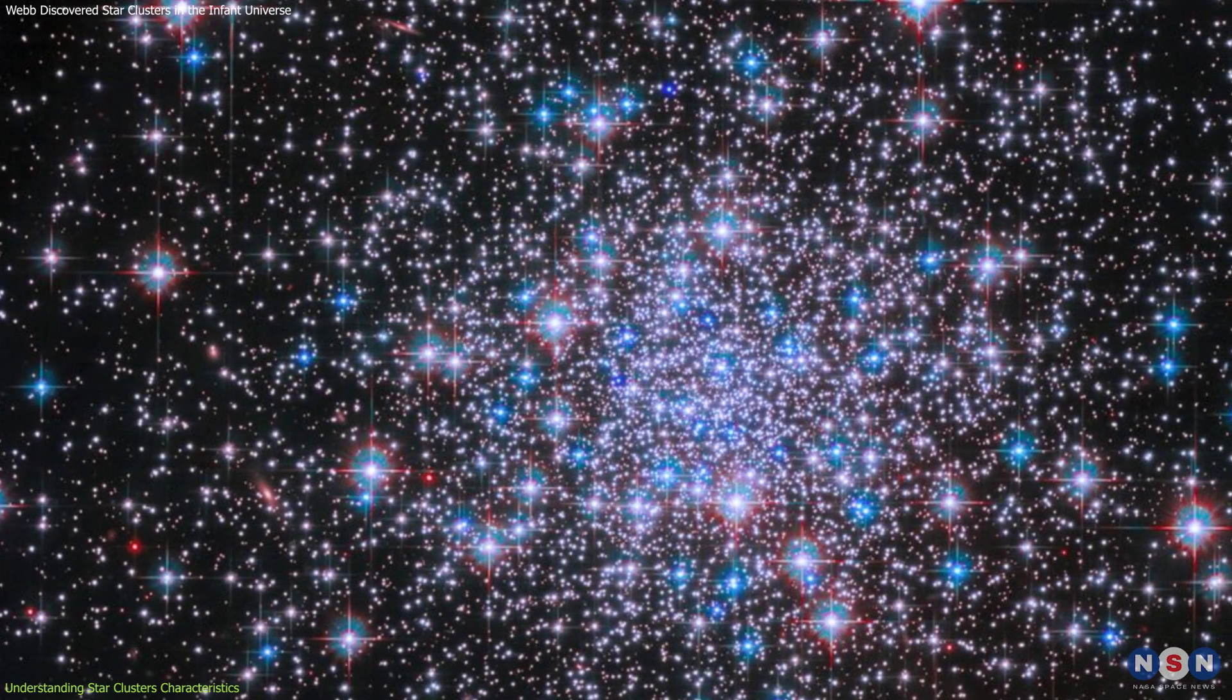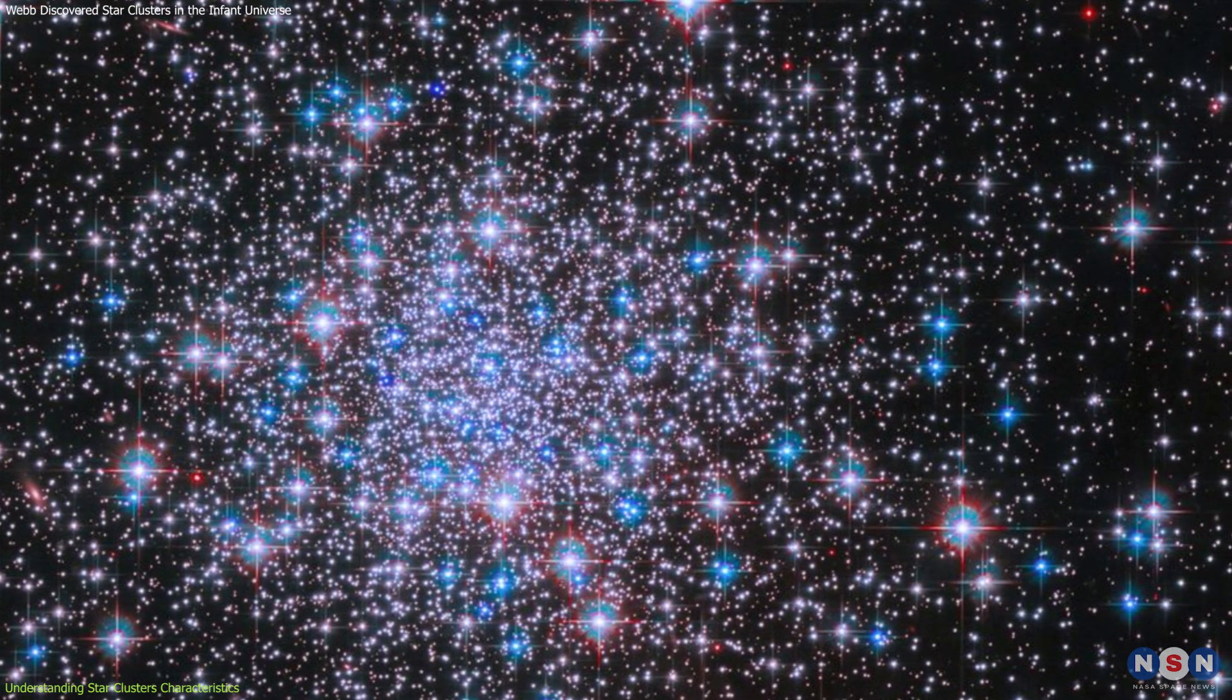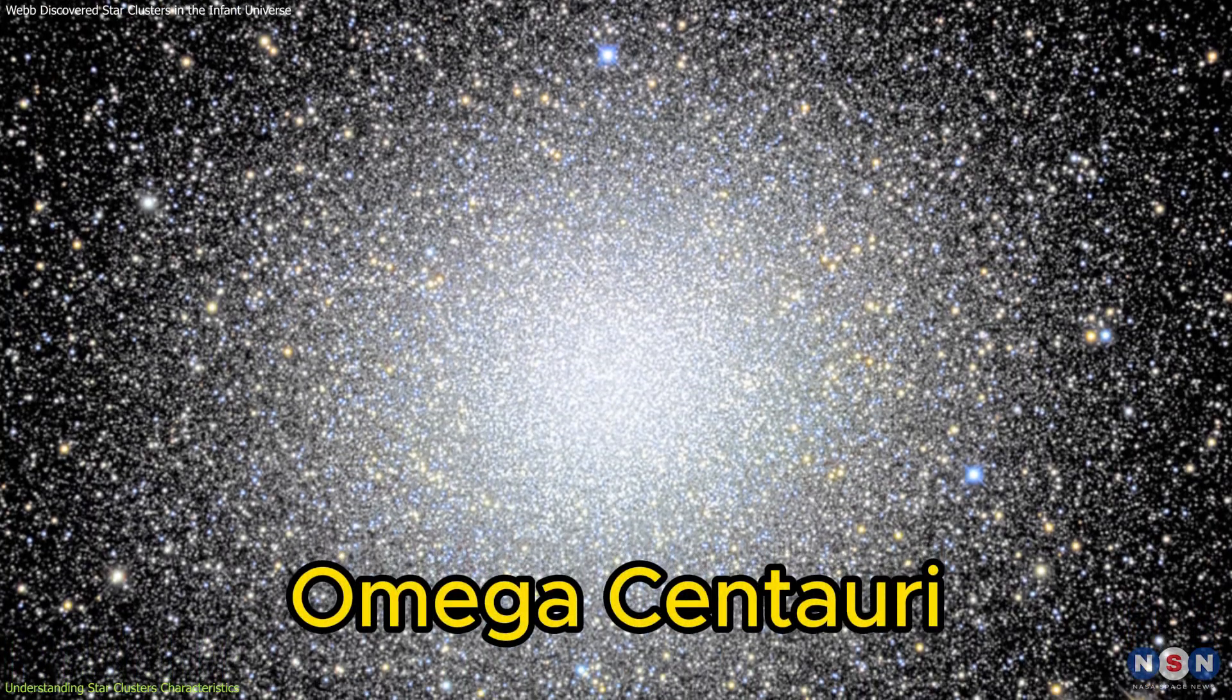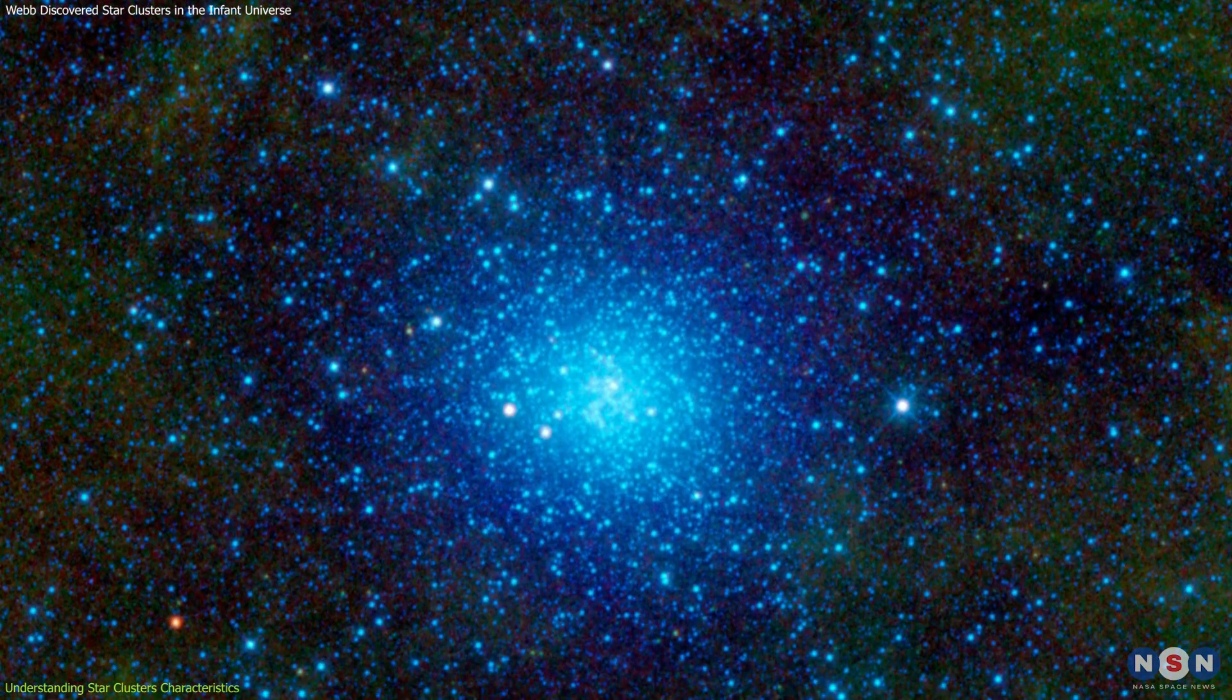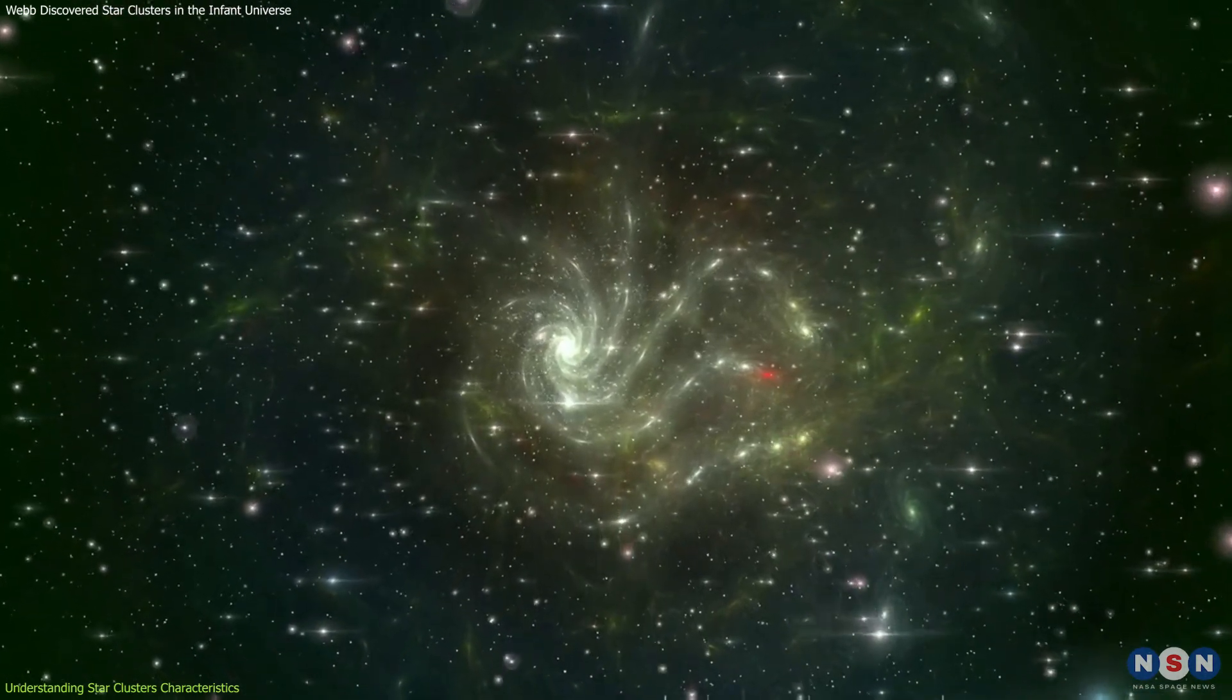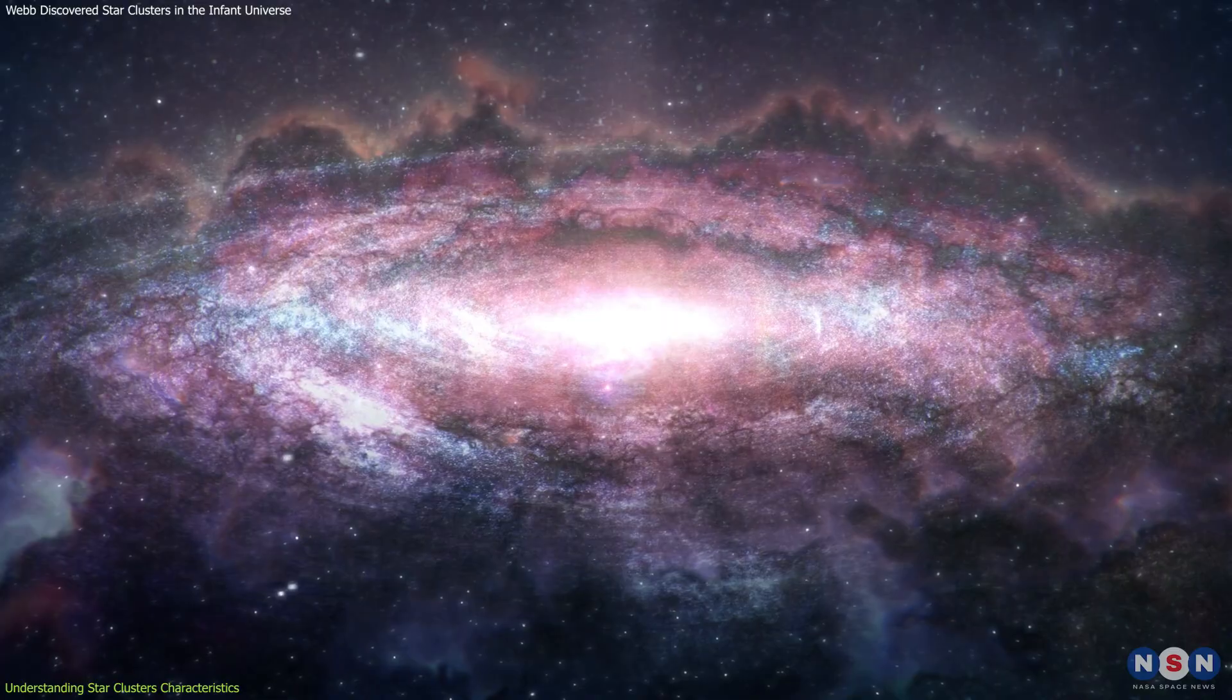On the other hand, globular clusters are ancient, densely packed collections of tens of thousands to hundreds of thousands of stars, which orbit the galactic core. An example is Omega Centauri, which is almost as old as the universe itself, and provides a snapshot of the early, relatively undeveloped universe. These clusters are extremely valuable for studying the conditions and processes of the early cosmos, because they have survived multiple epochs of the galaxy's evolution.